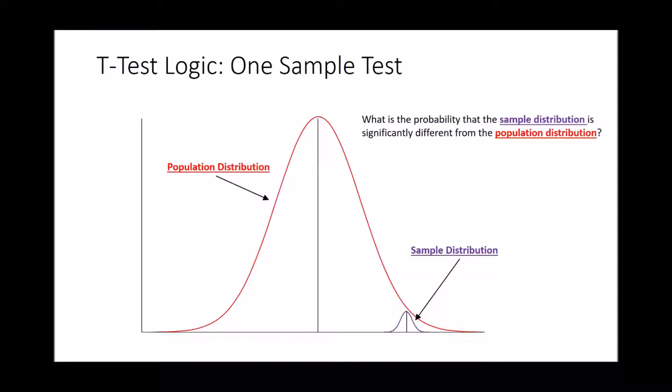We all know what the population distribution is — the mean and standard deviation of a population and the population of scores on a particular outcome. A one-sample t-test asks the question: what is the probability that a sample distribution is significantly different from the population distribution? So if we take a sample, is that distribution significantly different from the population? We'll jump into what 'significantly different' actually means in a minute.